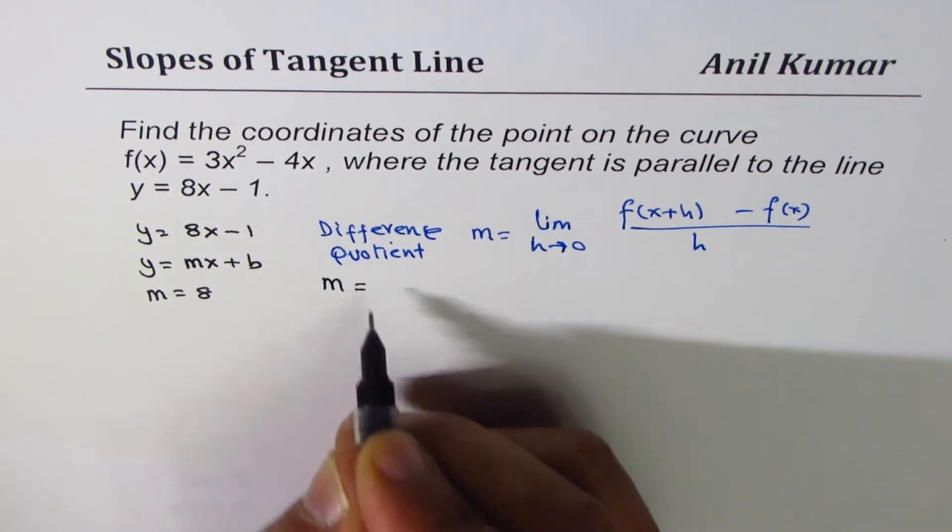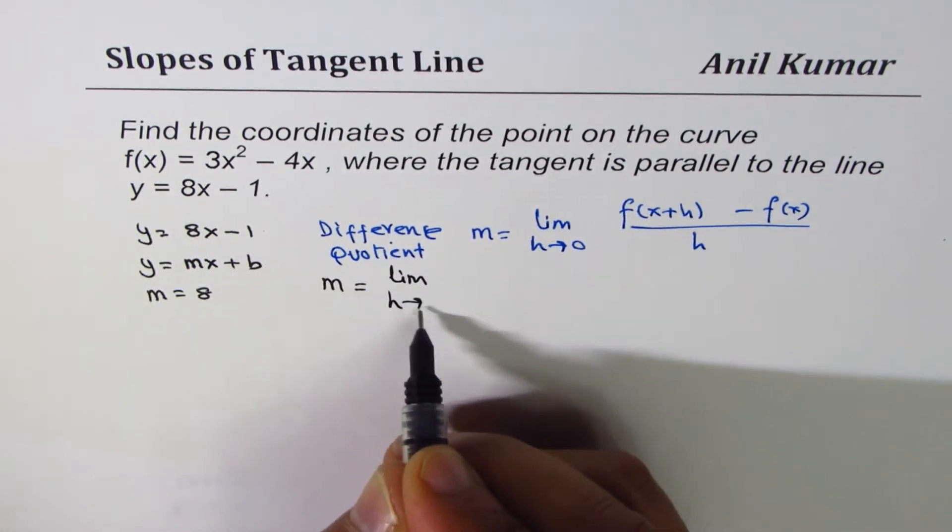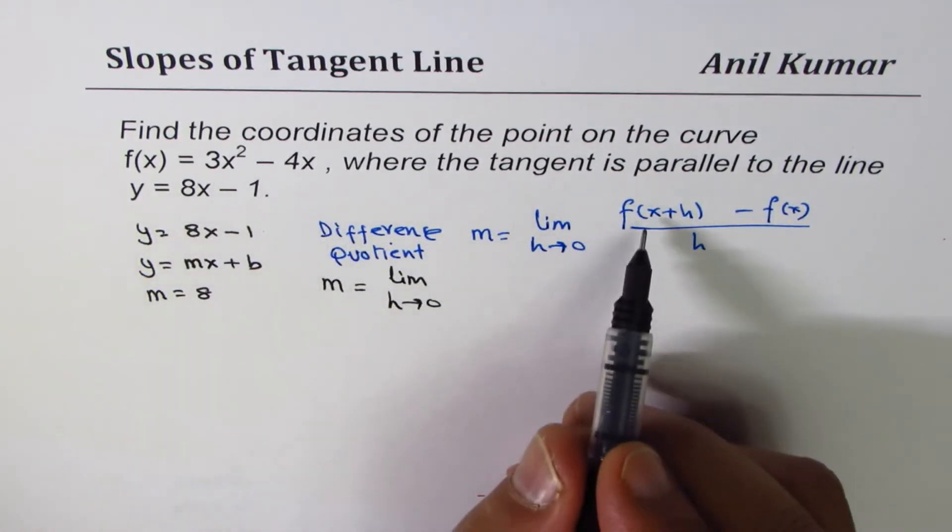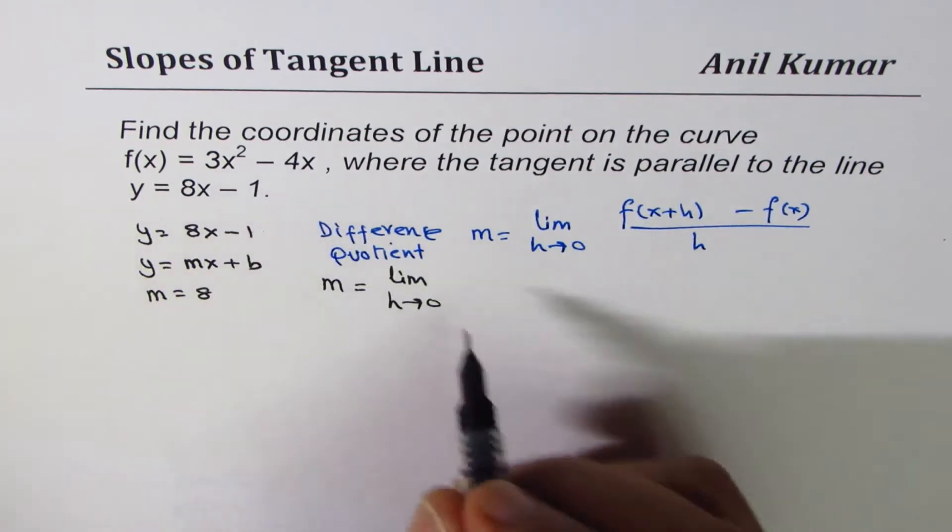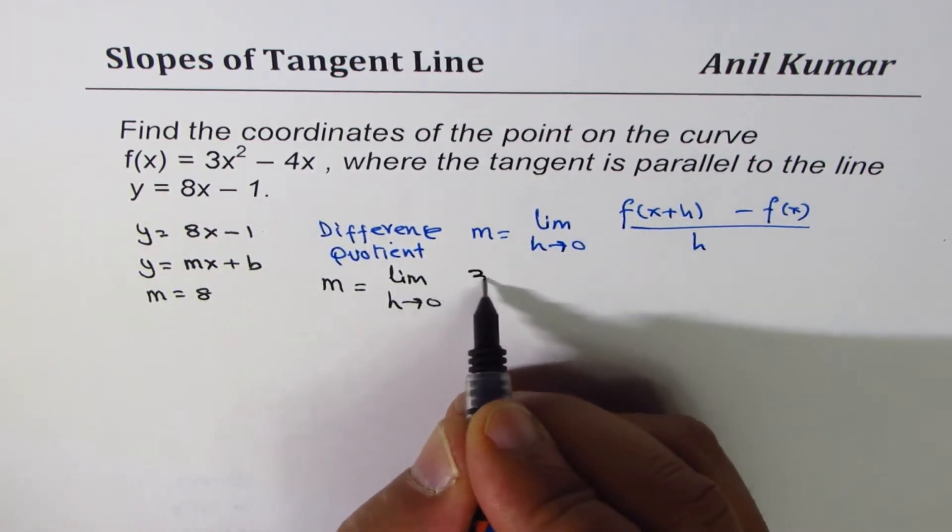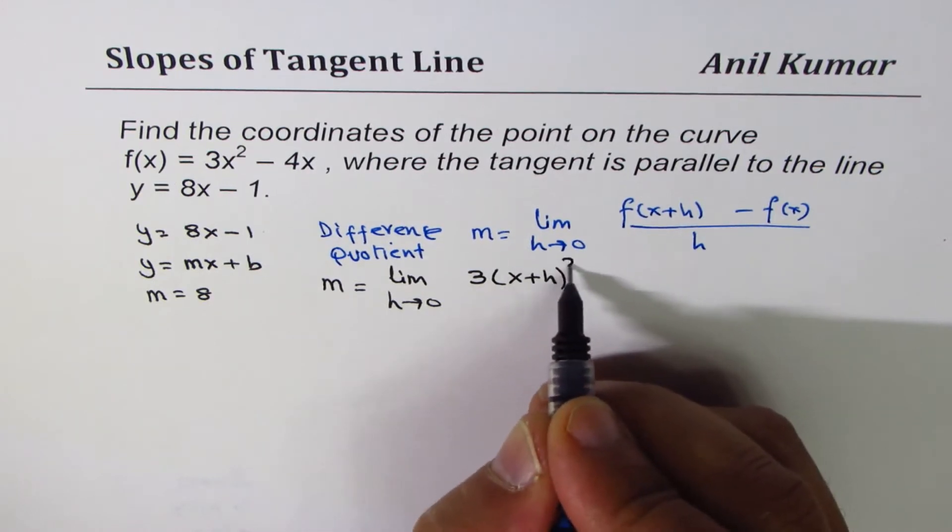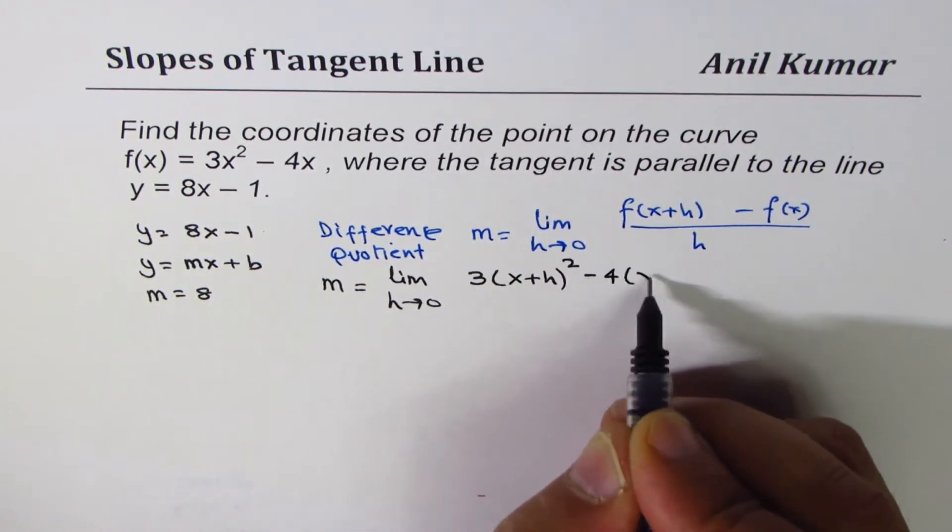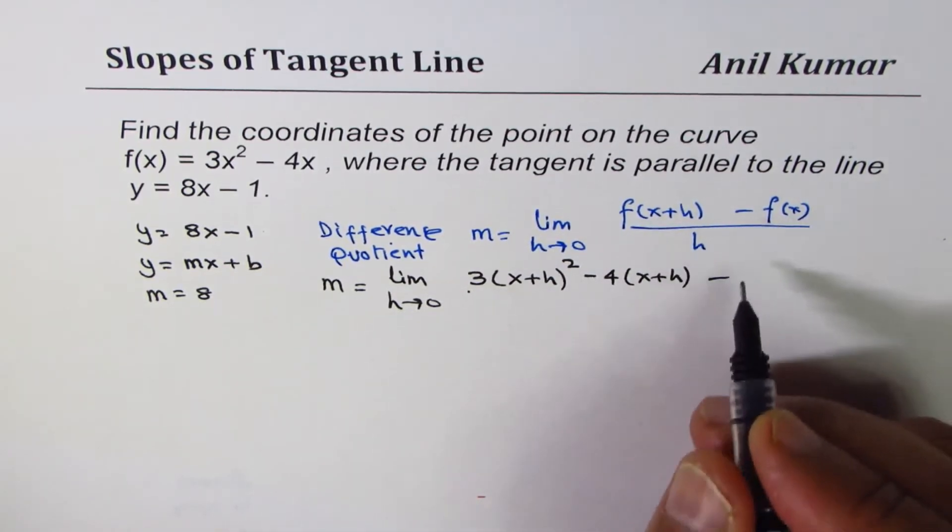The slope m will be lim(h→0) of f(x+h) minus f(x) divided by h. f(x) is given as 3x² - 4x, so f(x+h) will be 3(x+h)² - replace x with x+h - minus 4(x+h), minus f(x) which is 3x² - 4x, divided by h.